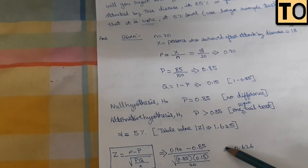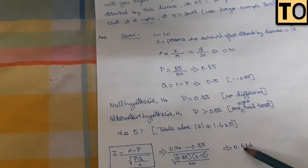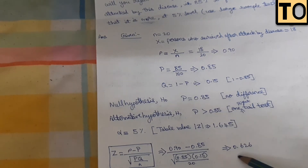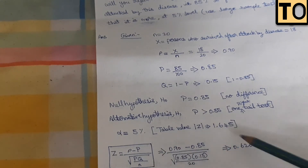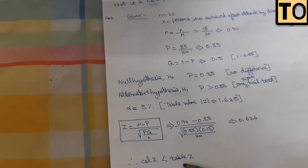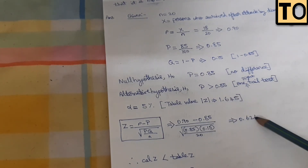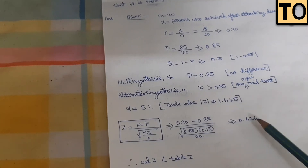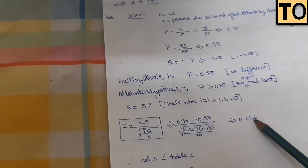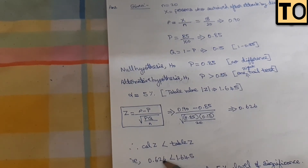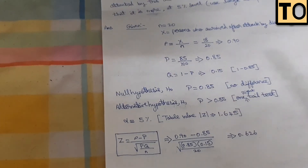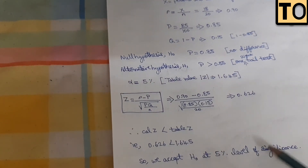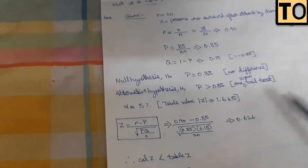The calculated Z value is 0.626. Comparing the table value to the calculated value: 0.626 is less than 1.645. Since the calculated Z is less than the critical value, we accept H₀ at the 5% level of significance. That is, we accept the null hypothesis at the 5% level of significance.